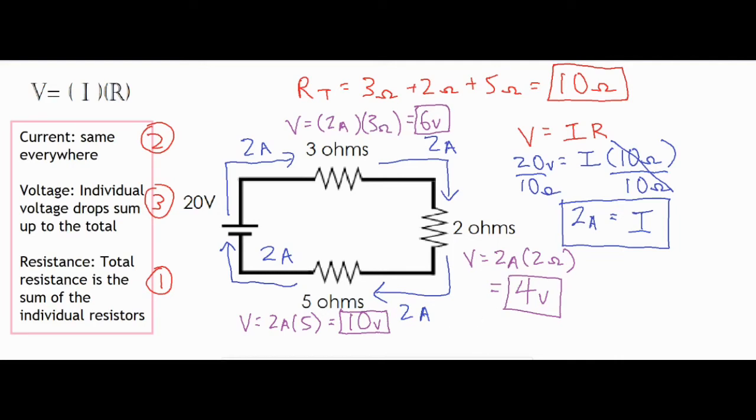And the voltage drop should get higher as it moves through resistors with a higher resistance. So the 5 ohm obviously has the most resistance out of the three, which means you need a little bit more energy per charge to move through that 5 ohm resistor. And then you definitely need a lot less to move through the 2 ohm resistor.